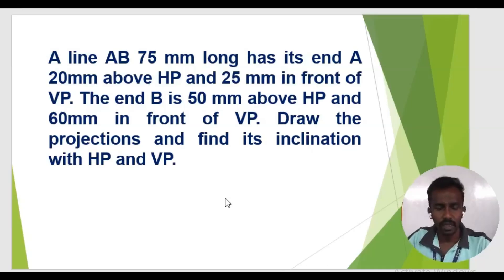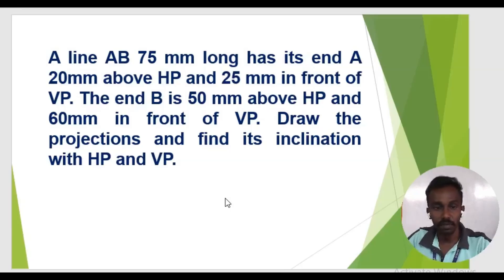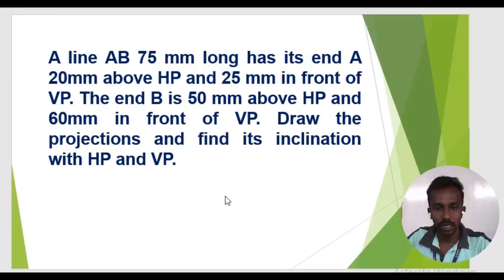Line AB, 75mm long, has its end A 20mm above HP and 25mm in front of VP. The end B is 50mm above HP and 60mm in front of VP. Draw the projection and find its true inclination with HP and VP.